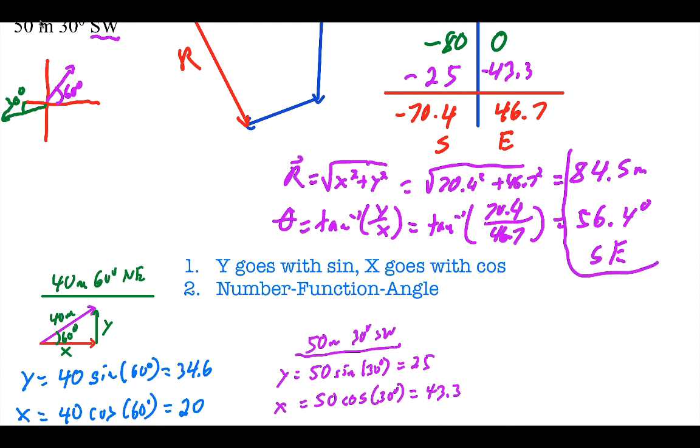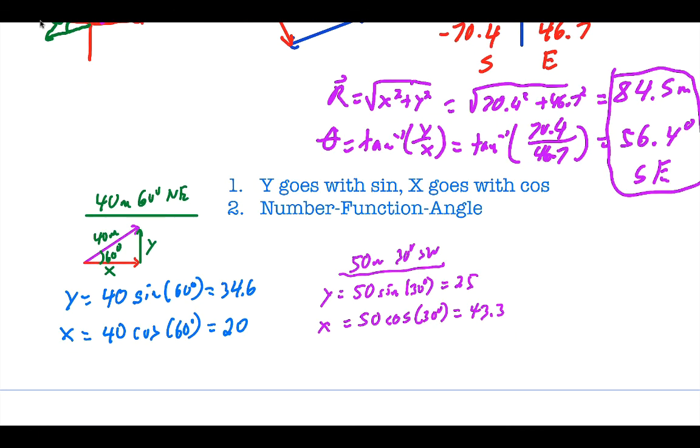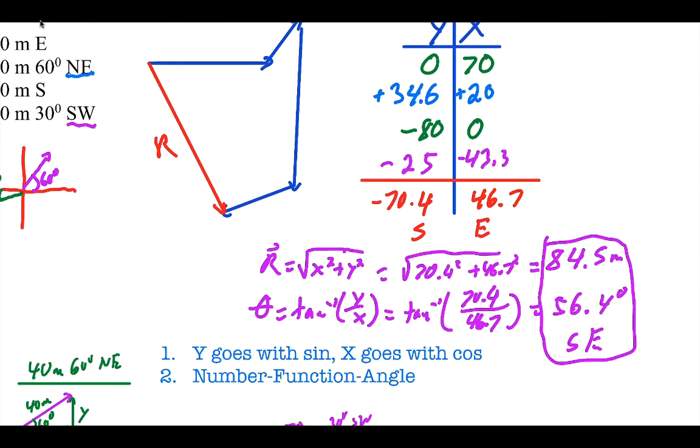So there's my complete answer. 84.5 meters, 56.4 degrees southeast. And that's how I do that. It takes some practice, especially doing things on your calculator. But if you follow this little method, set up your chart, do the easy vectors, break up each vector into its components using y goes with sine, x goes with cosine, number function angle. Put everything in your chart, check your signs, add everything down, do the resultant and the inverse tangent. And you're done. Good luck with this. See you next time.